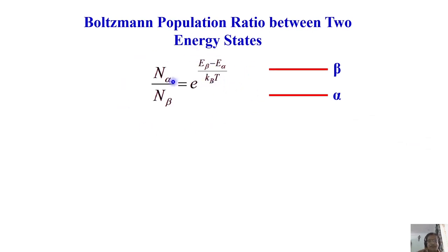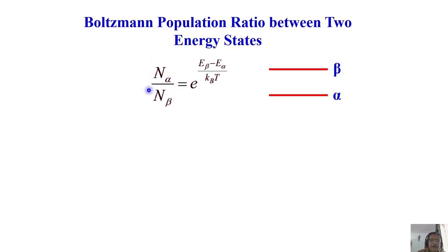The Boltzmann distribution defines the population ratio between two energy states. It is simply given by: N_alpha / N_beta = e^(ΔE / k_B T), where k_B is the Boltzmann constant and T is the temperature. In some books it is written as e^(-(E_beta - E_alpha) / k_B T) — it depends on which is your upper state and which is your lower state. If you take the ratio N_beta / N_alpha, it becomes e^(-(E_beta - E_alpha) / k_B T).